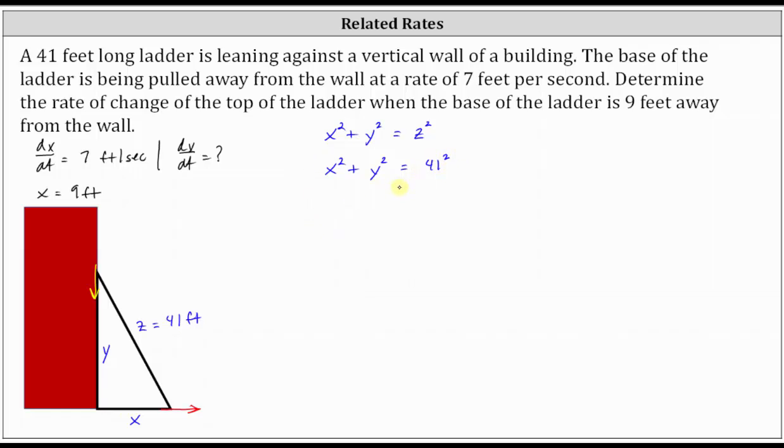And now we differentiate both sides of the equation with respect to T. We have the derivative of X squared plus Y squared with respect to T equals the derivative of 41 squared with respect to T.